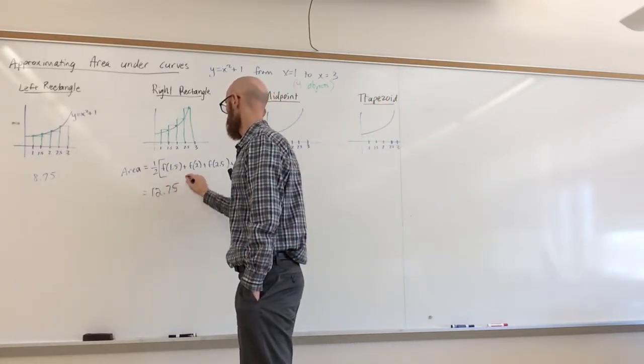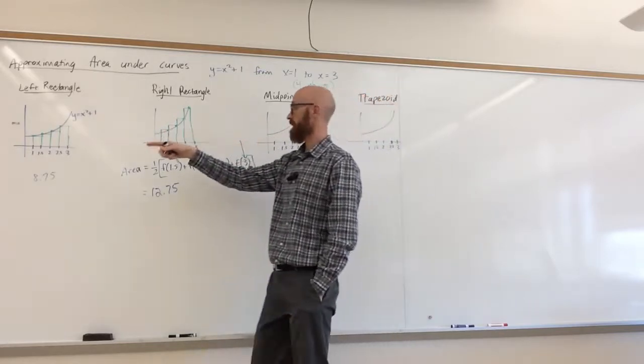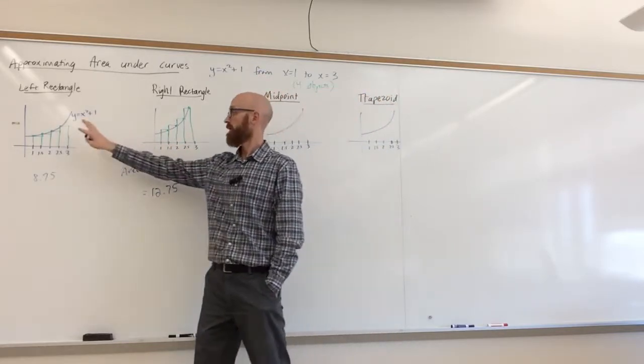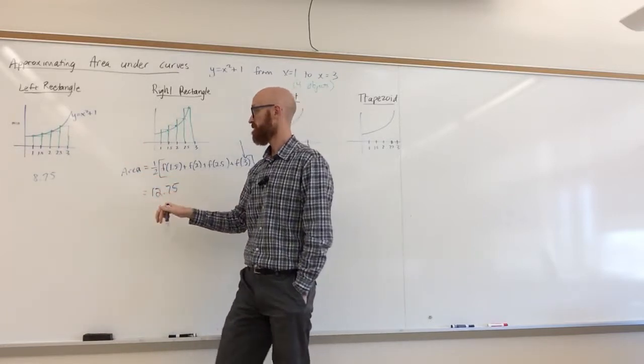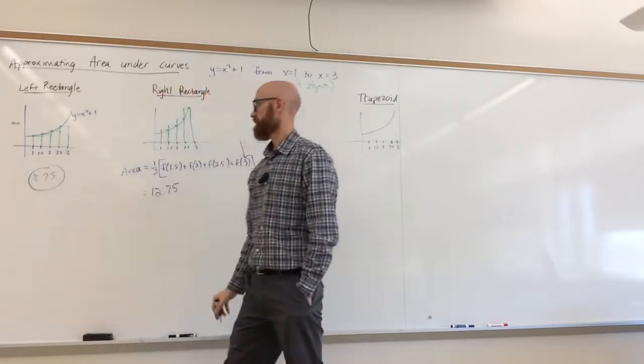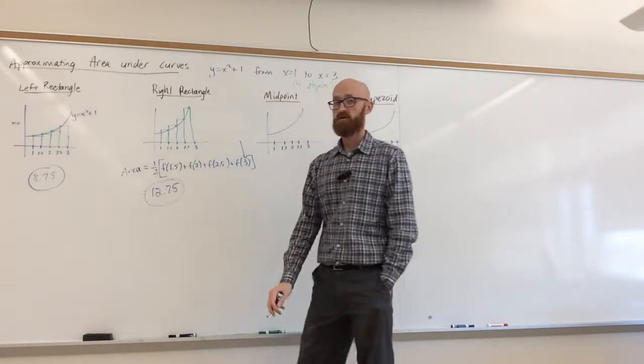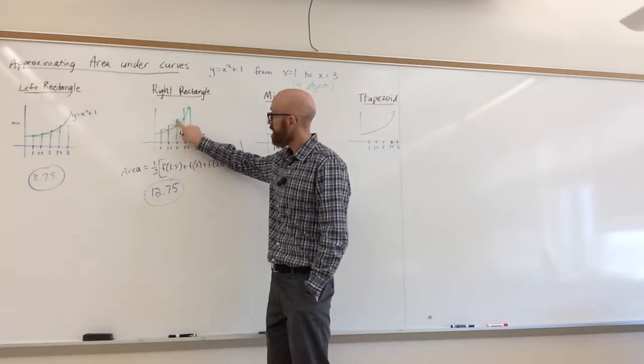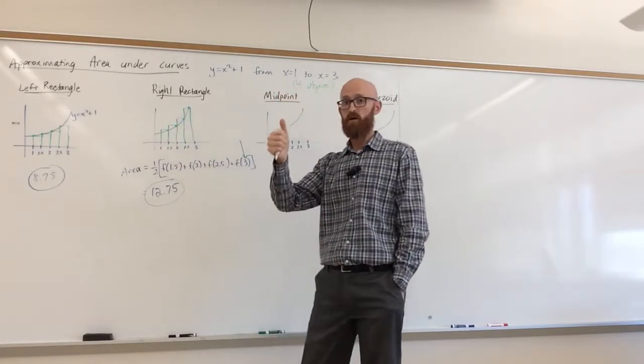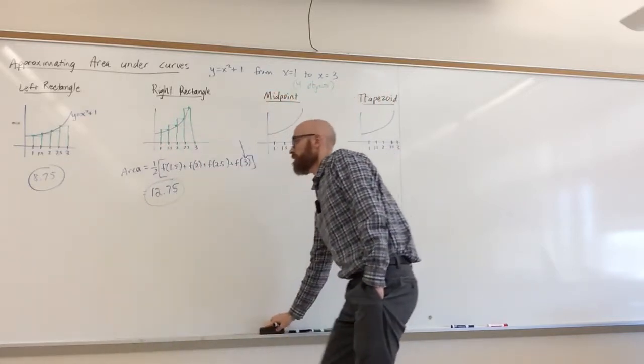I hope you'd agree that for the area that we're trying to approximate, which is the area underneath the curve, the left-hand rectangle method will give you an under approximation, 8.75, so we know the actual area is bigger than that. Right-handed rectangles will give you 12.75, which is an over approximation, because the green rectangles live above, in all cases, the curve. So we're going to look for a compromise.